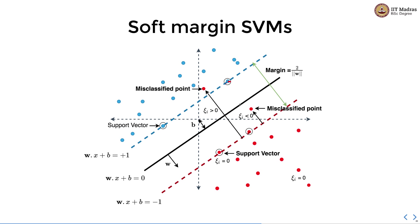This situation is depicted pictorially. We have a separating hyperplane, bounding hyperplanes, and support vectors, and there are a few misclassified points. For example, one point lies within the margin, and another point is misclassified — the red point is classified as a blue point. In such a situation it is difficult for the SVM to find the maximum margin classifier.